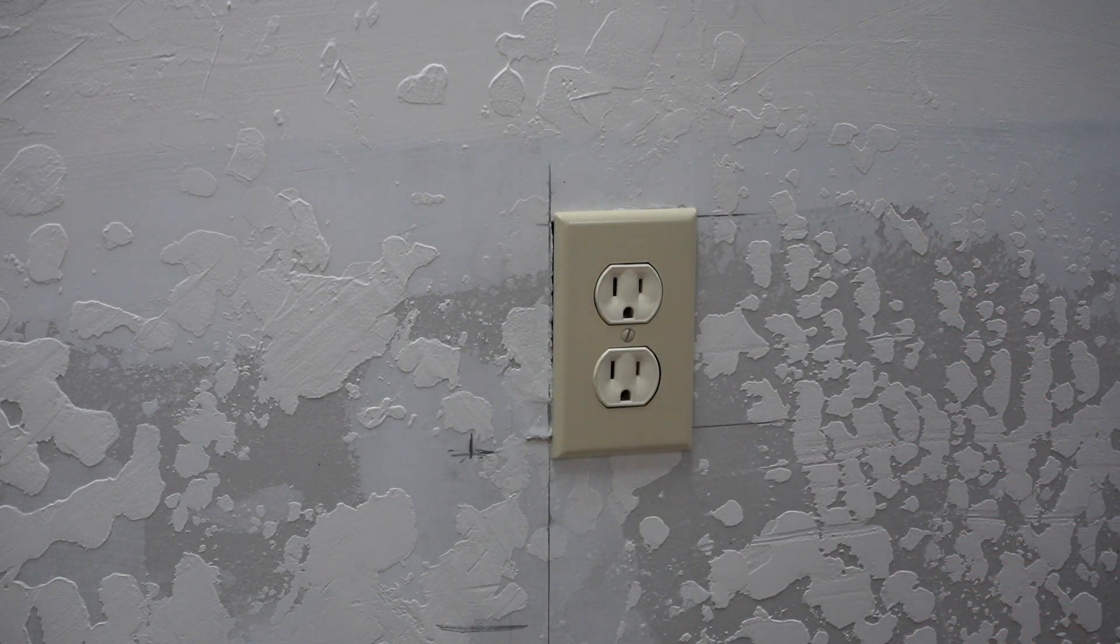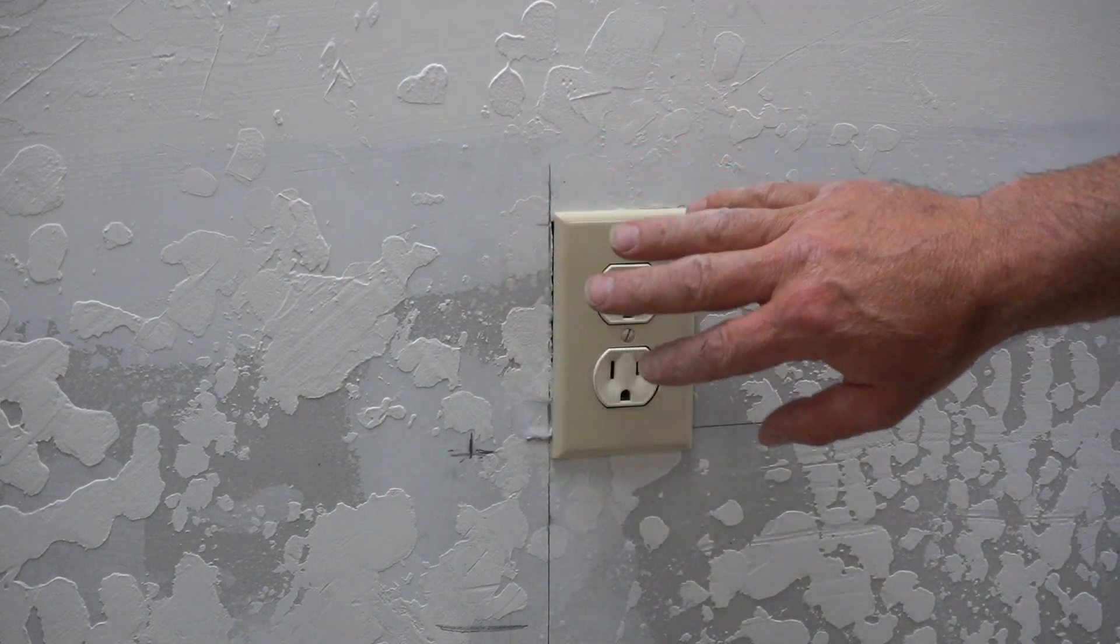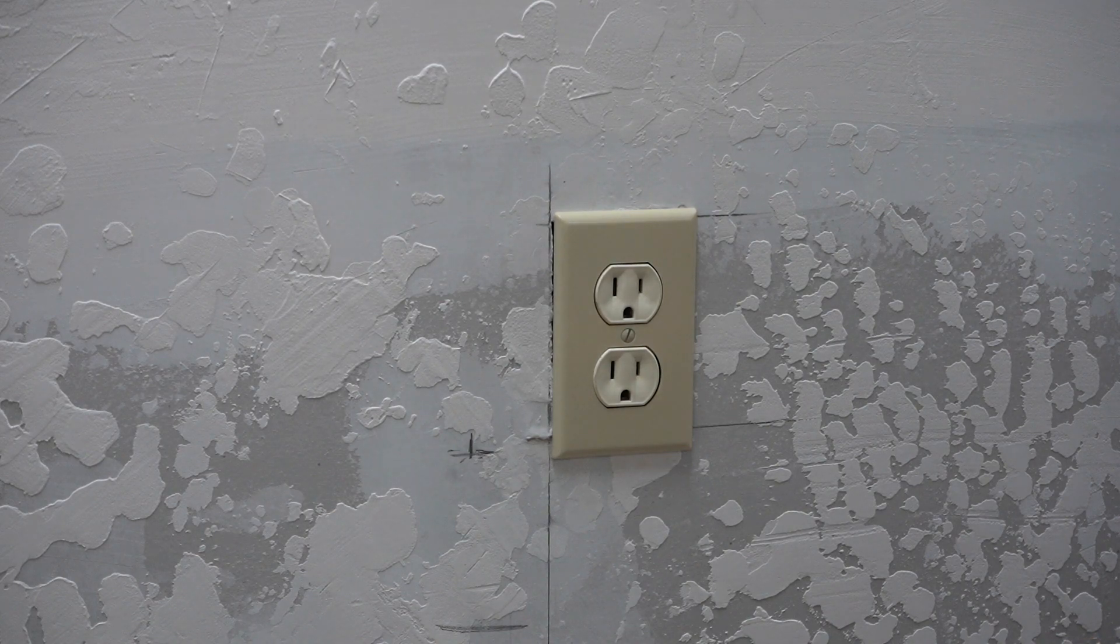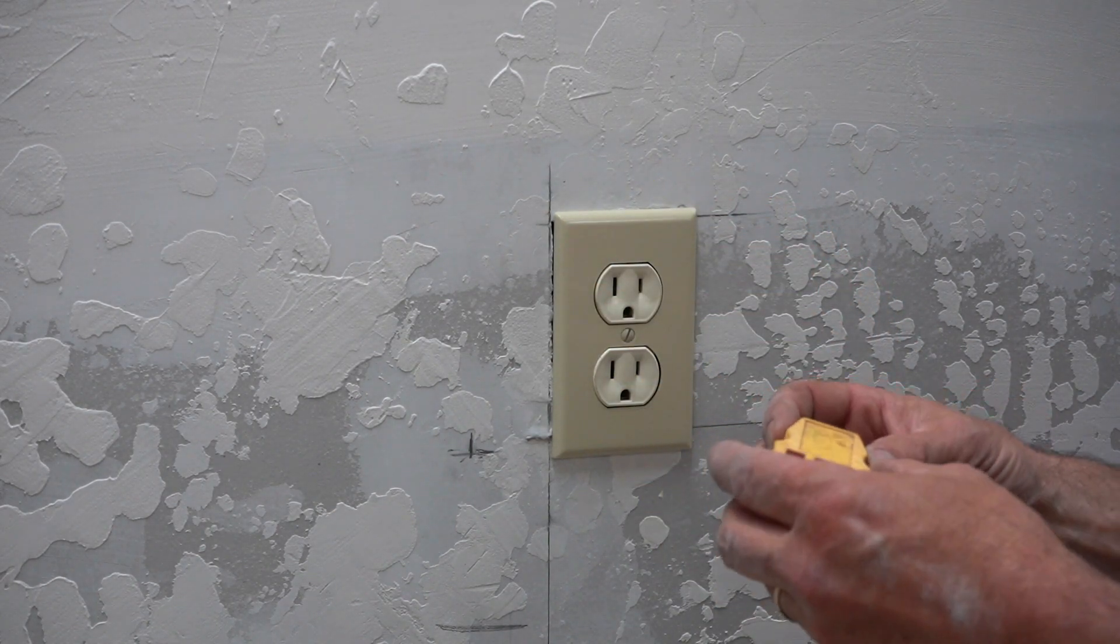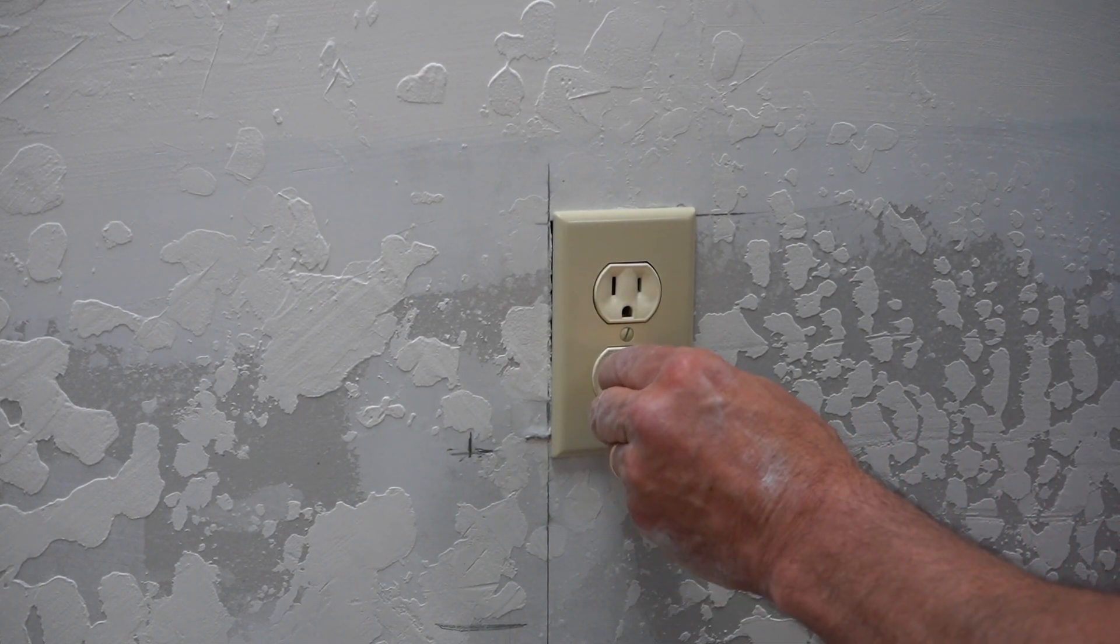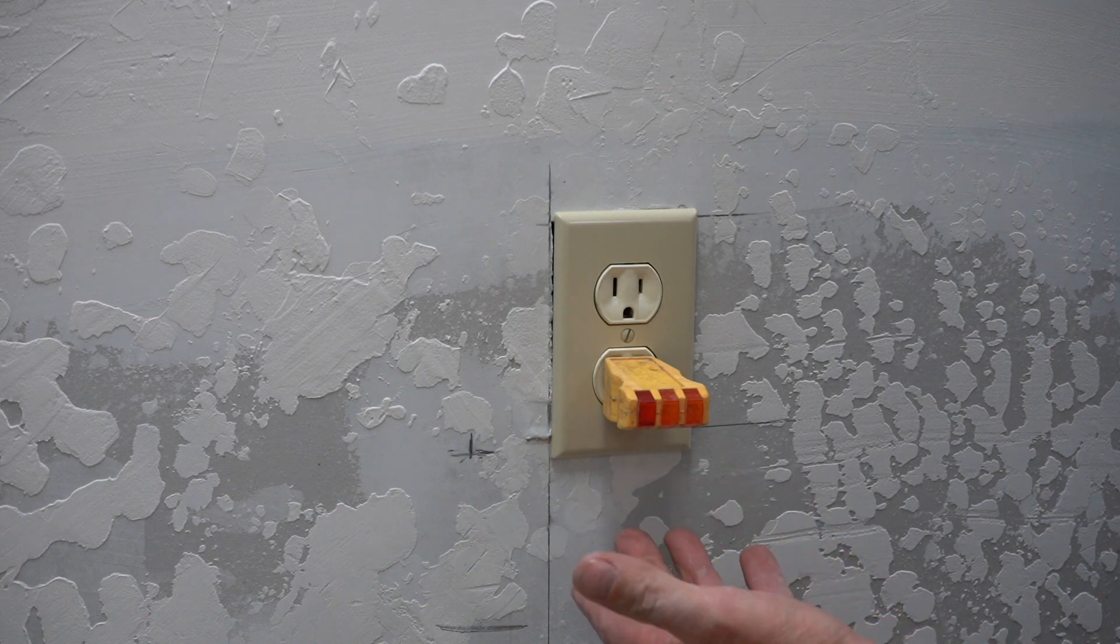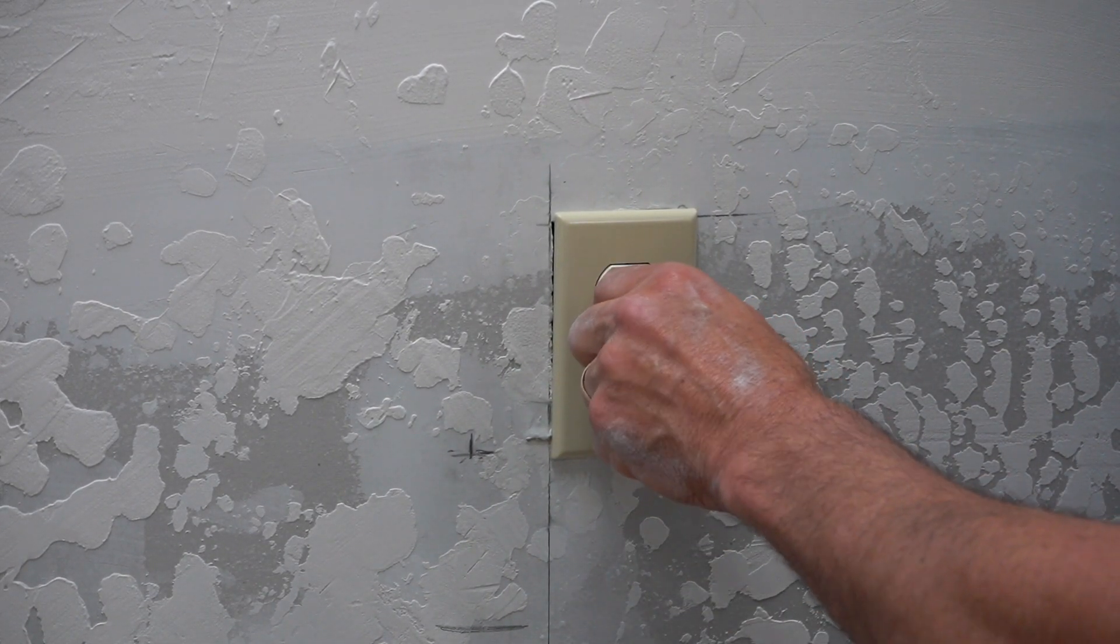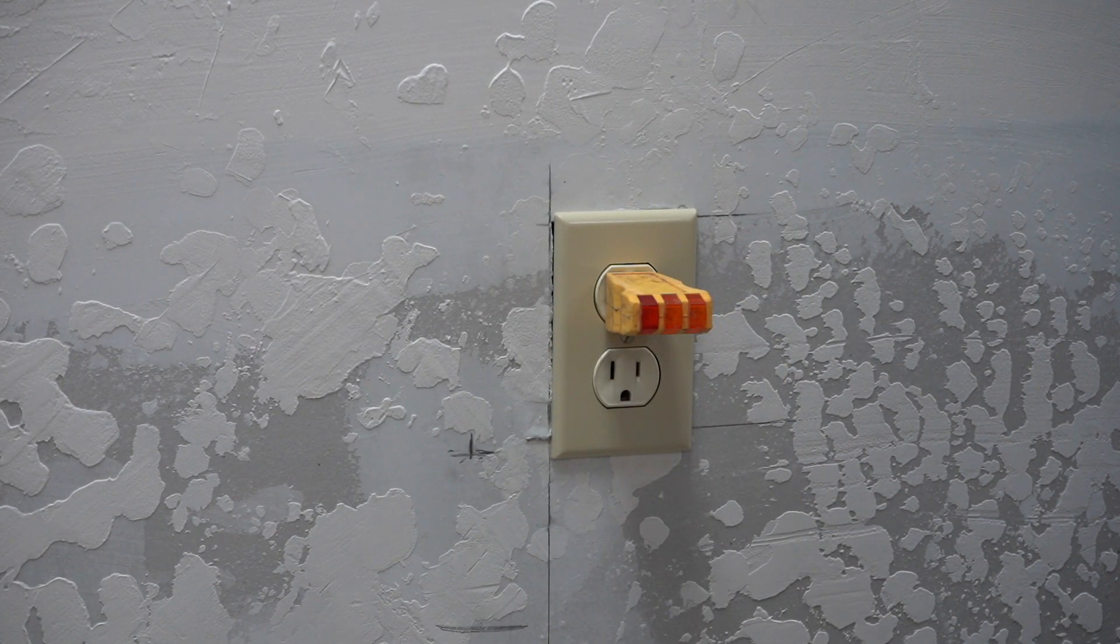So what we want to do is make sure this is not hot. We're going to use a circuit tester. Mine's pretty old, but basically if you plug this in and these lights come on, it means there's power going to it. I've already turned it off, but I'll show you at the panel how we do that.